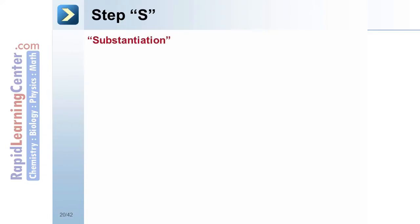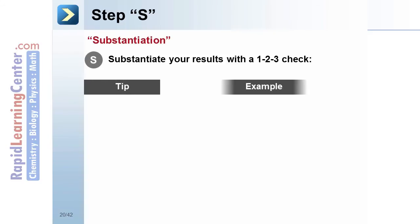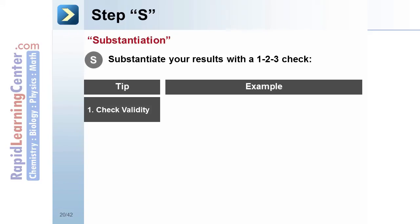Step S, substantiation. Here is where you will mentally check your answer. For example, are the results even possible or in the correct ballpark? Should it be 10,000 when you get 100, or vice versa?